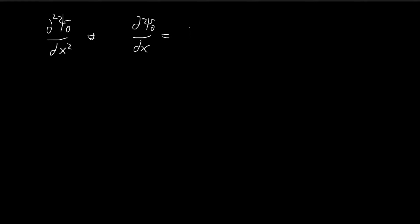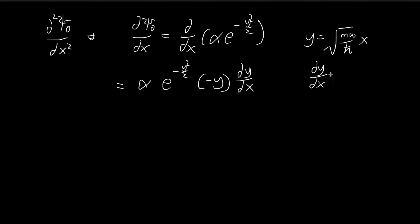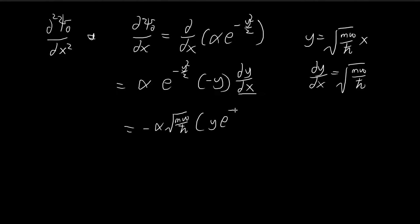Using our simplification, we take the derivative of alpha e to the power of negative y-squared over 2. First, we pull out the constant alpha, and then use the chain rule, giving us e to the power of negative y-squared over 2 times negative y times dy/dx. Recall that dy/dx is just equal to the square root of m omega divided by h-bar. So in the end, we get negative alpha times m omega divided by h-bar — which is the dy/dx — times y e to the power of negative y-squared over 2.